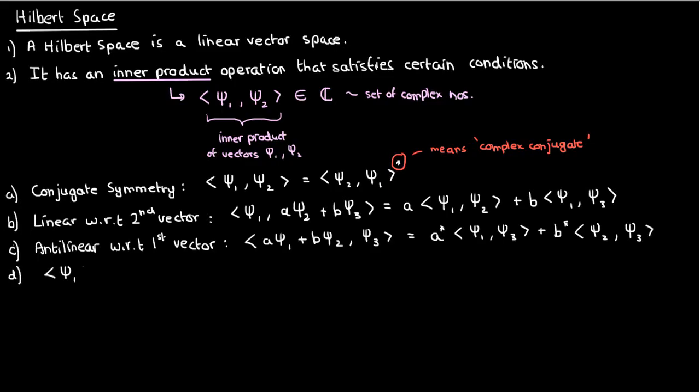In addition, the inner product of a vector with itself must not be negative and is only zero when the vector itself is zero. This is also known as positive definiteness.